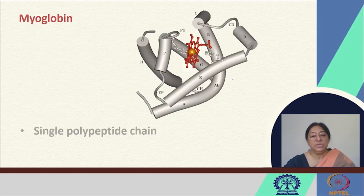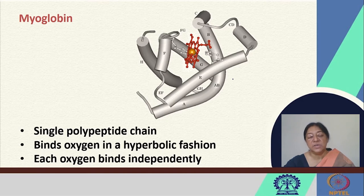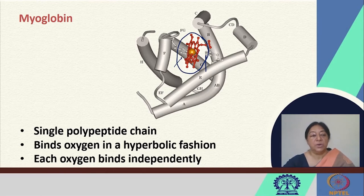The myoglobin protein has a single polypeptide chain and it binds oxygen in a hyperbolic fashion; each oxygen binds independently. It is comprised of several helices as we can see marked in this figure. The iron present, shown as a golden sphere, has specific coordination with the histidine residues present in myoglobin.